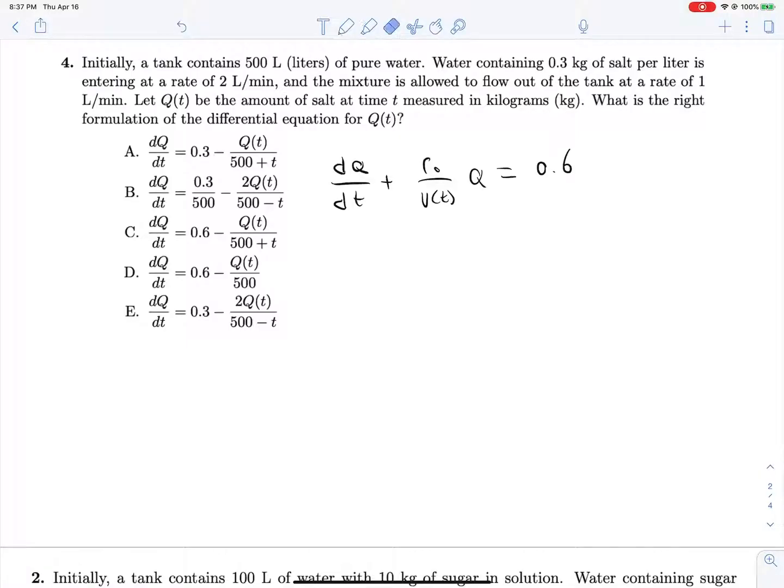So on this side, our rate in will be 2 and our concentration in is 0.3, so we get 0.6 over here. Our rate out is 1 liter per minute. And since we start with 500 liters of pure water and things are flowing in at 2 liters per minute and out at a rate of 1 liter per minute, we're gaining 1 liter every minute, every unit t. So we can see that dq/dt equals 0.6 minus 1 over 500 plus t times q. And looking around for that, I see it right over there.